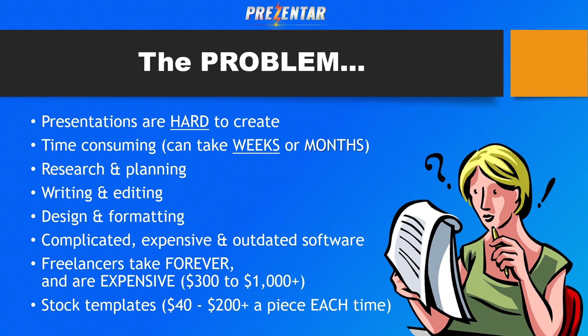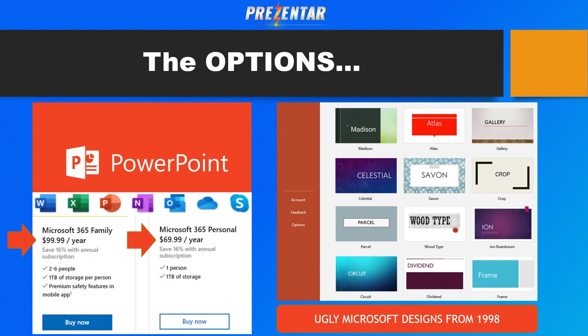If you wanted to go down the stock template route, you're looking at spending $50, $100, up to $200 for a specific theme or template, which you then have to edit yourself anyway. A couple of the main options right now in the marketplace — you could use PowerPoint. And if you've noticed something with PowerPoint and a lot of big players in the software technology space, they're all charging recurring fees now.